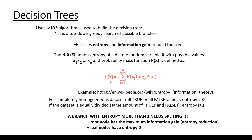This is why we have to define the so-called Shannon entropy. The ID3 algorithm is used to build decision trees — it is a top-down greedy search of possible branches and it uses entropy and information gain. We can define the Shannon entropy H(X) of a discrete random variable X, where X can have possible values X1, X2 up to Xn with probability mass function P(X), using this formula: it is minus the sum from i equals 1 to n of P(X_i) times the logarithm of P(X_i).